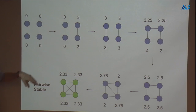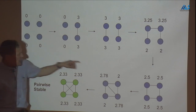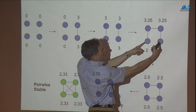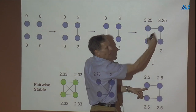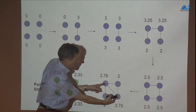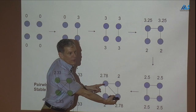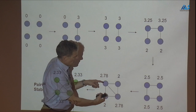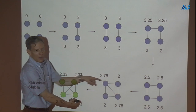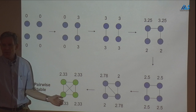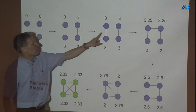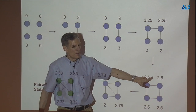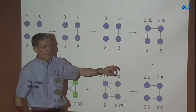As links keep getting added — each pair forms a link, their payoffs rise to 2.5 but partners' payoffs drop — eventually we reach a network where everyone has payoff 2.33. The arrows in the diagram represent pairwise stability: whether agents would want to deviate from that network given those payoffs.